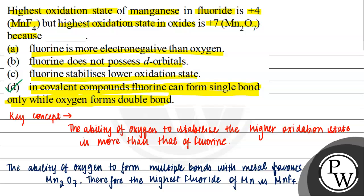Let's review the other reasons. A says fluorine is more electronegative than oxygen - this is false. Fluorine does not possess d-orbitals - this is also false. I mean, this is not the reason for the question. Fluorine stabilizes lower oxidation state, and this is also not the reason for the question. I hope you understood the question well. Best of luck.